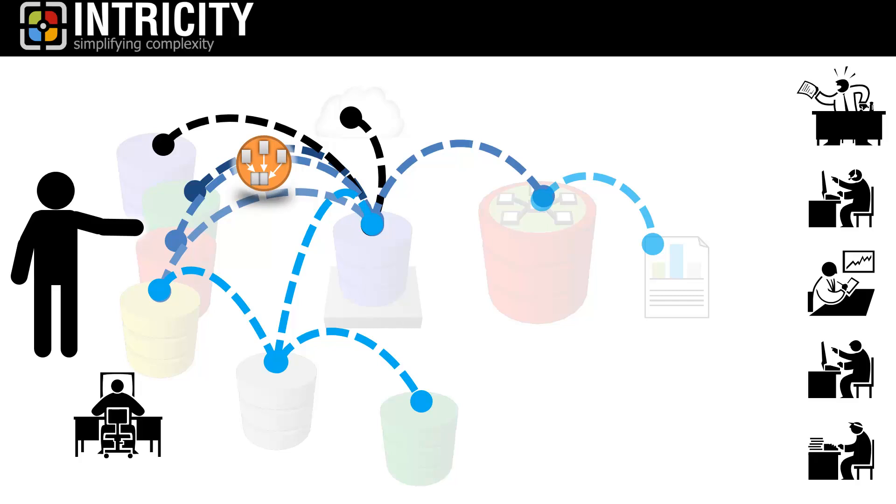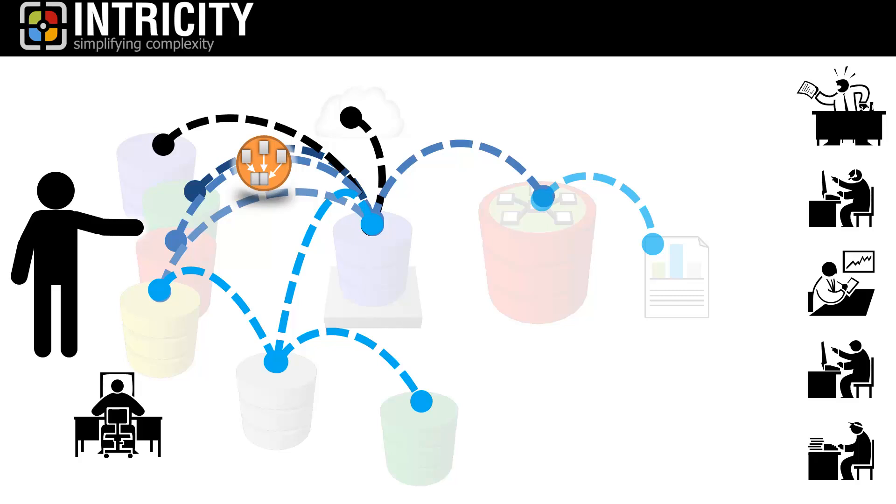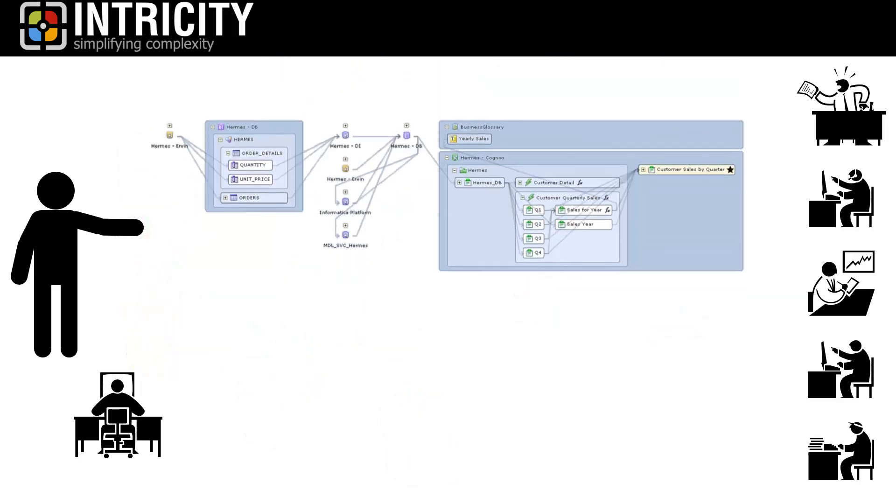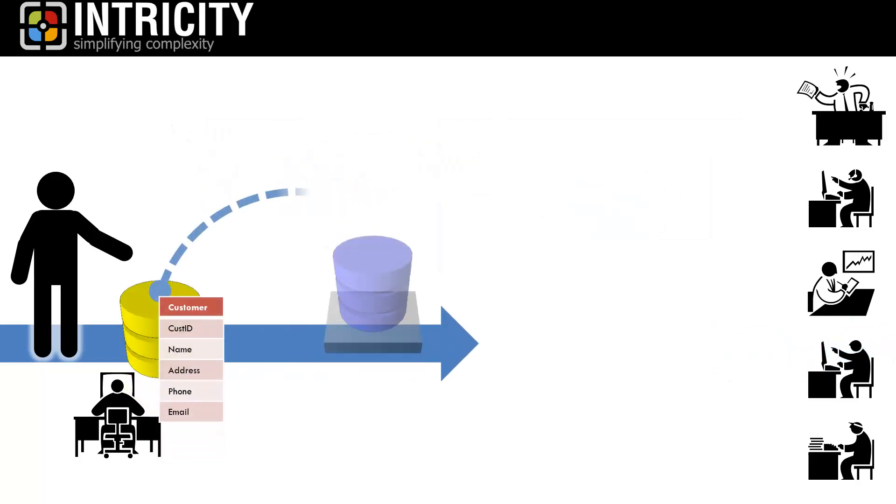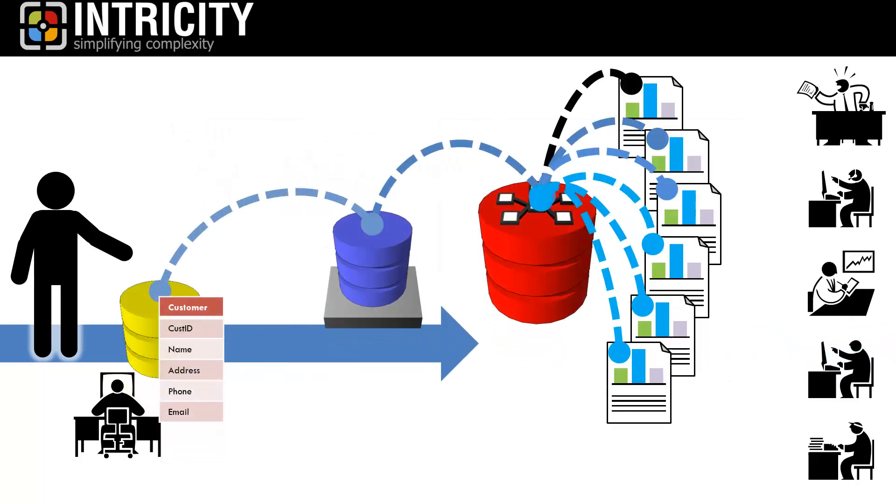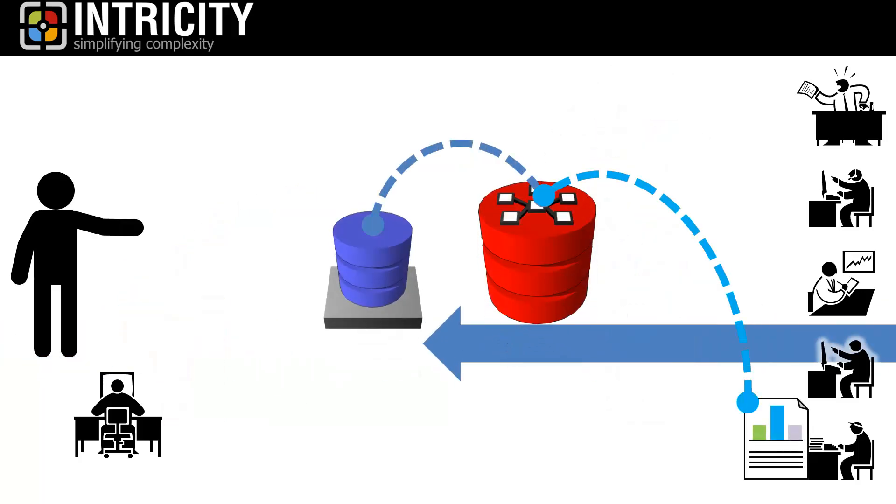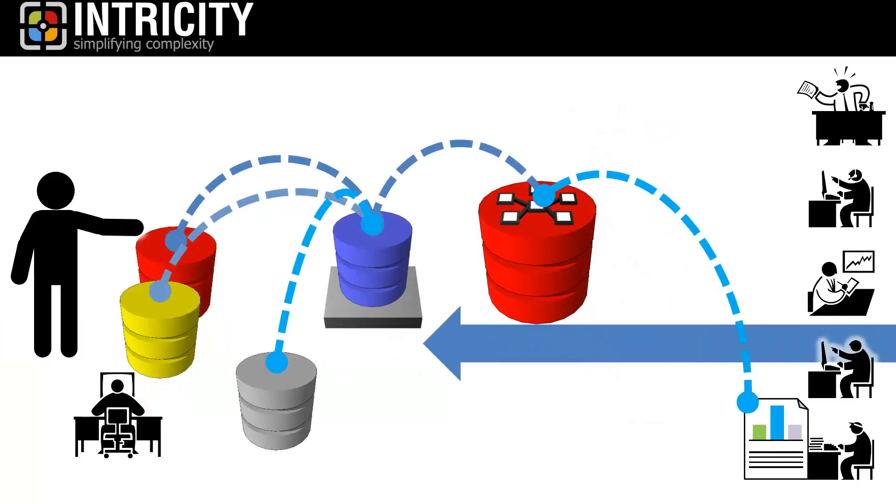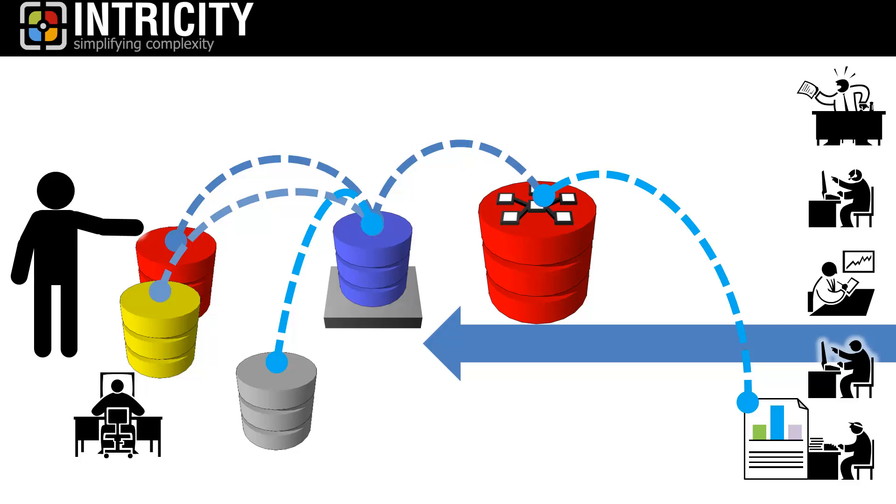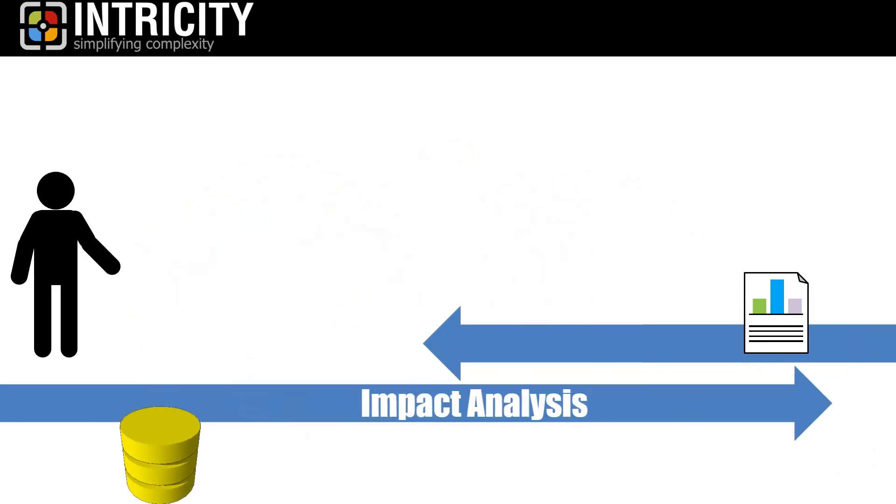The end result of an implemented metadata management tool is a full data tracking map, which gives you insight coming from either angle. You can look at it from a developer's perspective and ask which reports use this table I'm about to edit, or you can look at it from a business user's perspective and ask how the data ended up in my report. We call these impact analysis and data lineage.